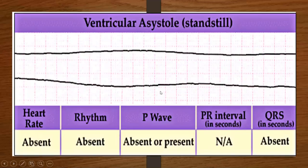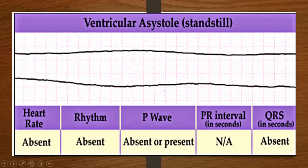Here's what's called ventricular asystole or standstill, in which there's no heart rate, no rhythm, no P waves — there's nothing. Your true asystole is when the patient has died or gone into complete full cardiac arrest.